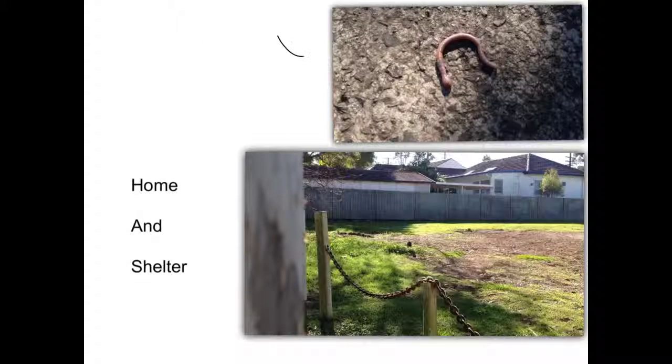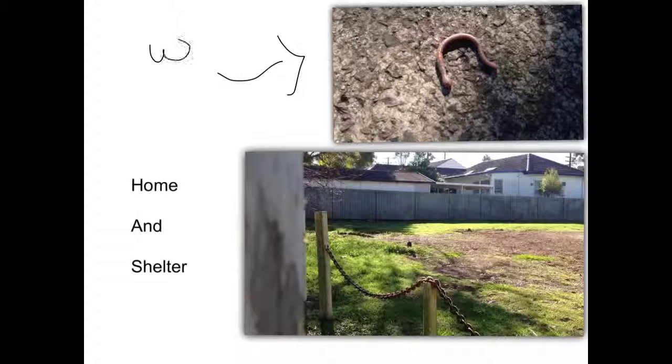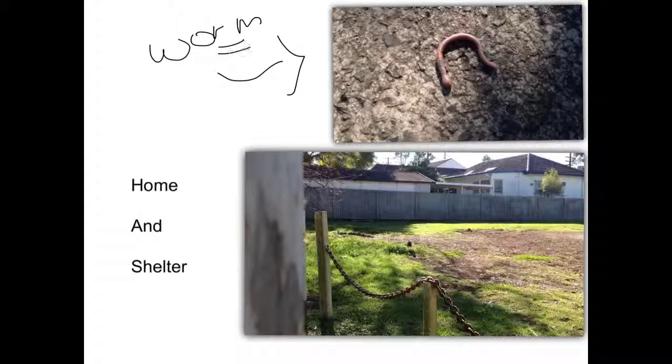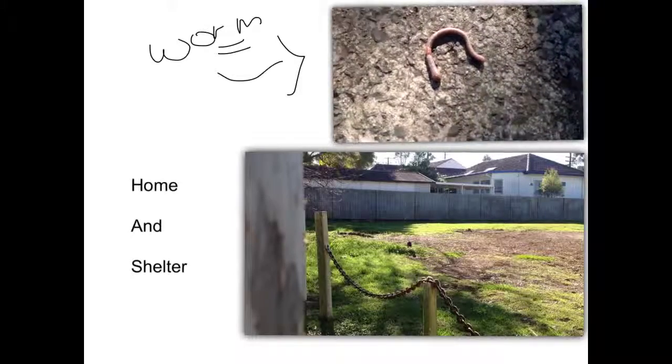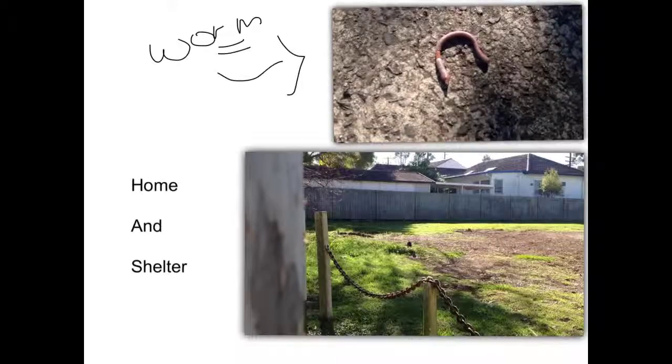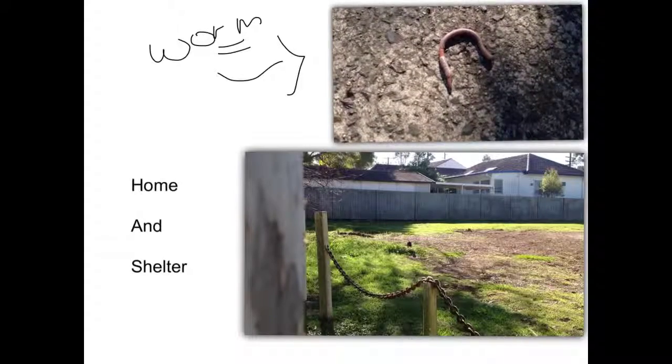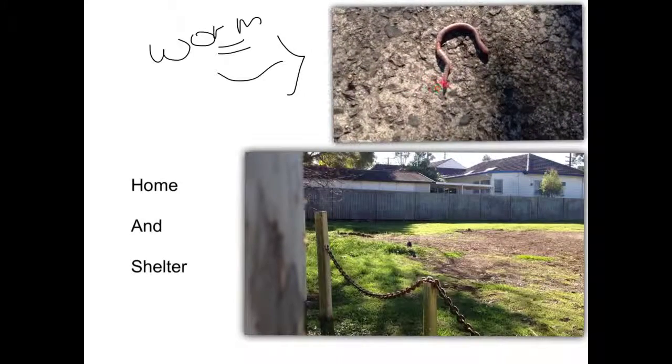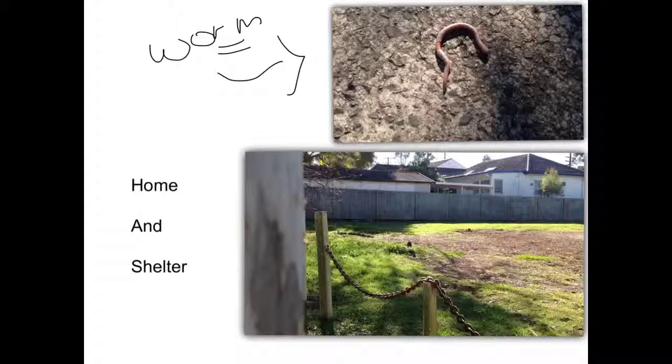In this first video right here you're going to see how a worm needs soil to be able to survive. This worm is found on the actual pavement and it's obviously going to have problems because it doesn't move very fast, and if a bird were to try to find it, it could quite easily find it on the pavement.